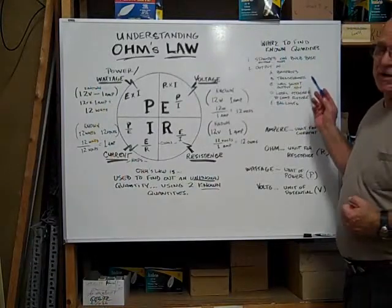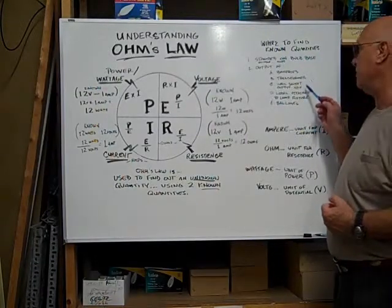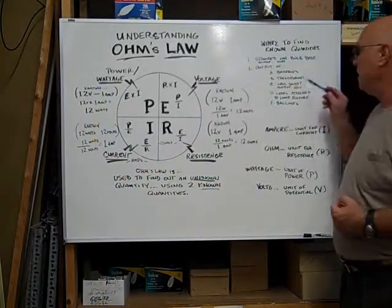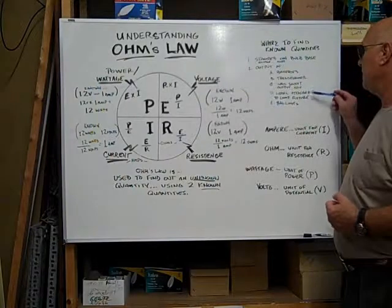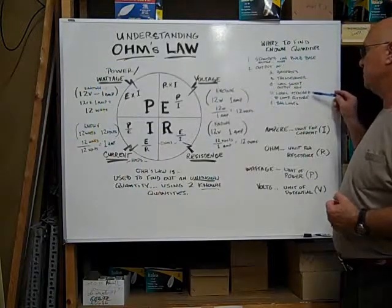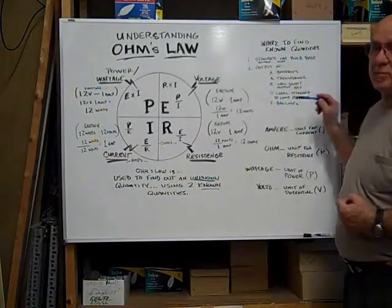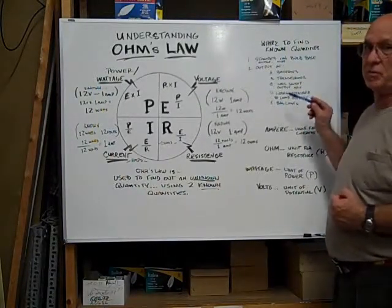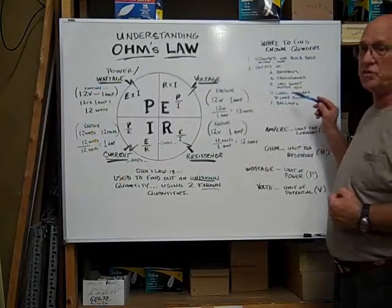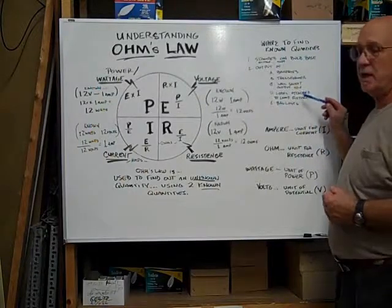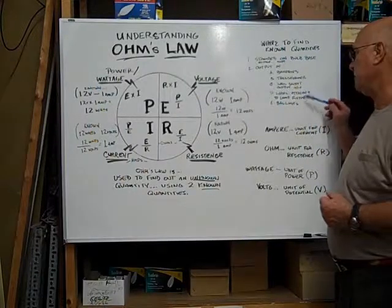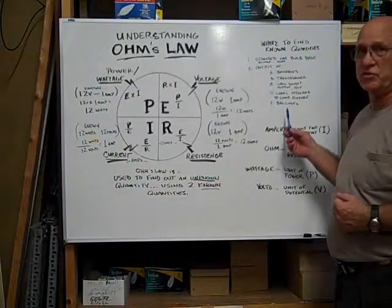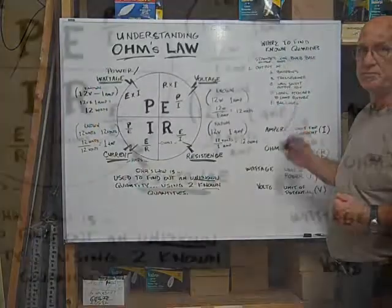The United States wall socket's output is 110 volts. There's sometimes a label attached to the lamp fixture that will give you the voltage output as well as the amps, and also on ballast you'll have voltage and amps.